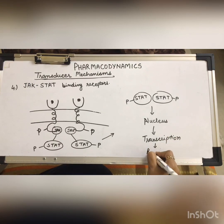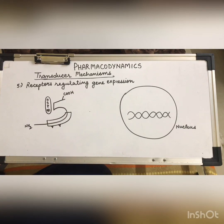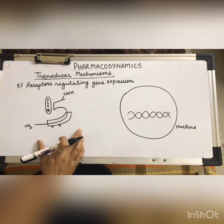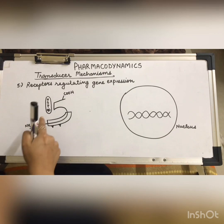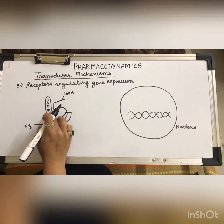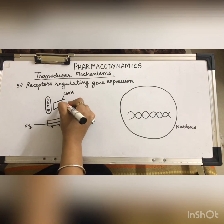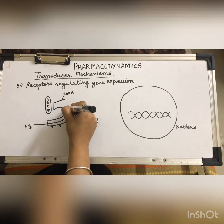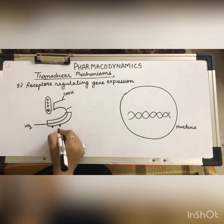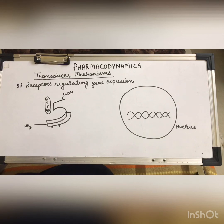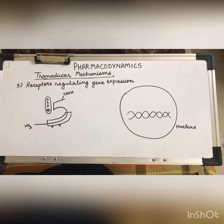The fifth and final type of transducer mechanism is receptors regulating gene expression, also known as glucocorticoid receptors. The glucocorticoid receptor is attached to HSP90 — heat shock proteins. On the carboxy terminal there is a binding site, also known as the hinge region, followed by a DNA-binding site with two zinc fingers, and then the amino terminus. Glucocorticoids are lipid-soluble chemical messengers, so they can easily penetrate the cell.